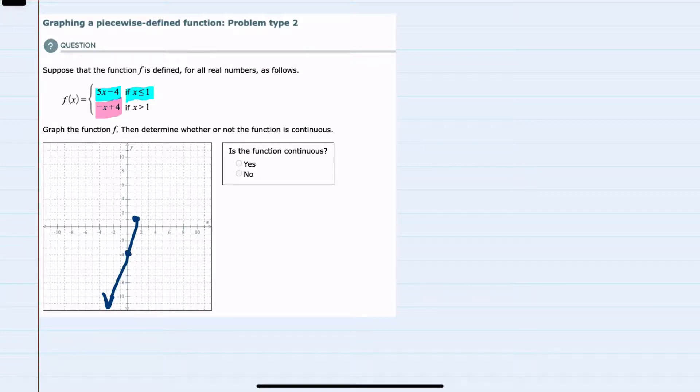That graph would have a y-intercept of 4 and a slope of negative 1, so down 1 over 1. Connecting those would give me this line, but again,